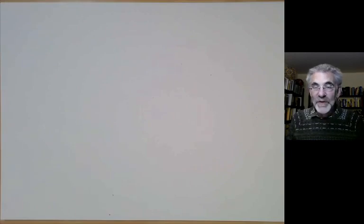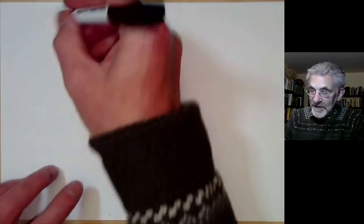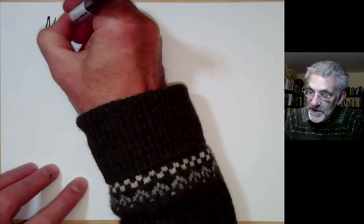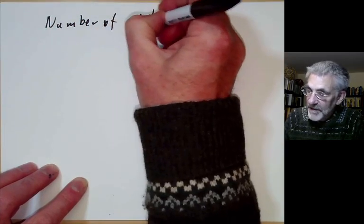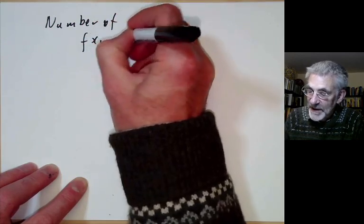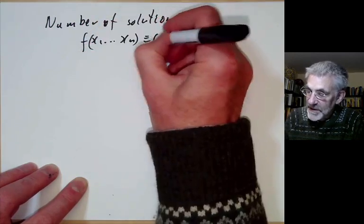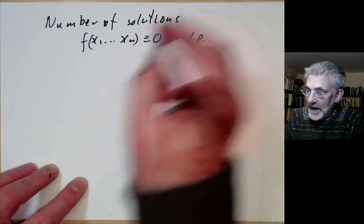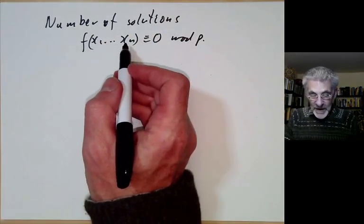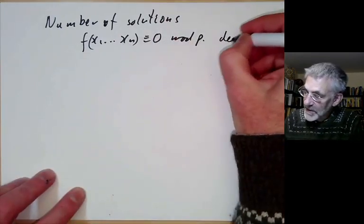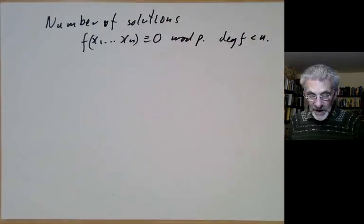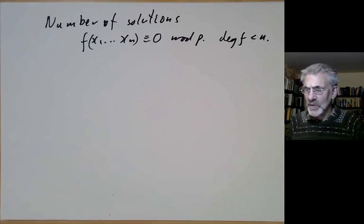Now we can move on to the Chevalier-Warning theorem. We want to know what is the number of solutions of the equation f(x1...xn) ≡ 0 mod p, where f is some sort of polynomial whose degree is less than n. So we want the degree of f is less than n. Let's try and count the solutions.